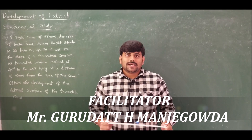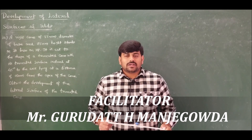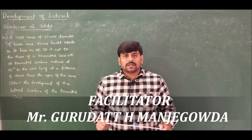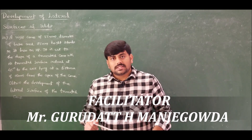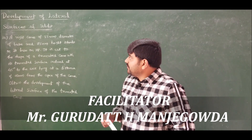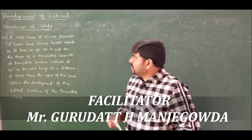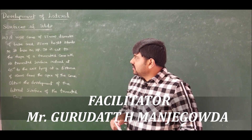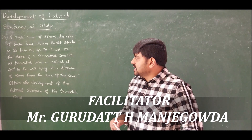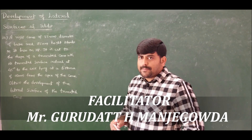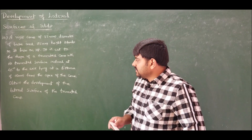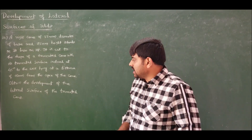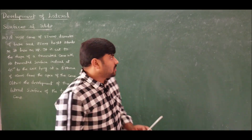Welcome, dear learners. In this course on engineering graphics, in module 4 we are discussing the development of lateral surfaces of solids. So far we have solved 13 problems. Problem number 14 states: a right cone of 55 mm diameter base and 75 mm height stands on its base on HP. It is cut to the shape of a truncated cone with its truncated surface inclined at 45 degrees to the axis, lying at a distance of 40 mm from the apex. Obtain the development of the lateral surface of the truncated cone.